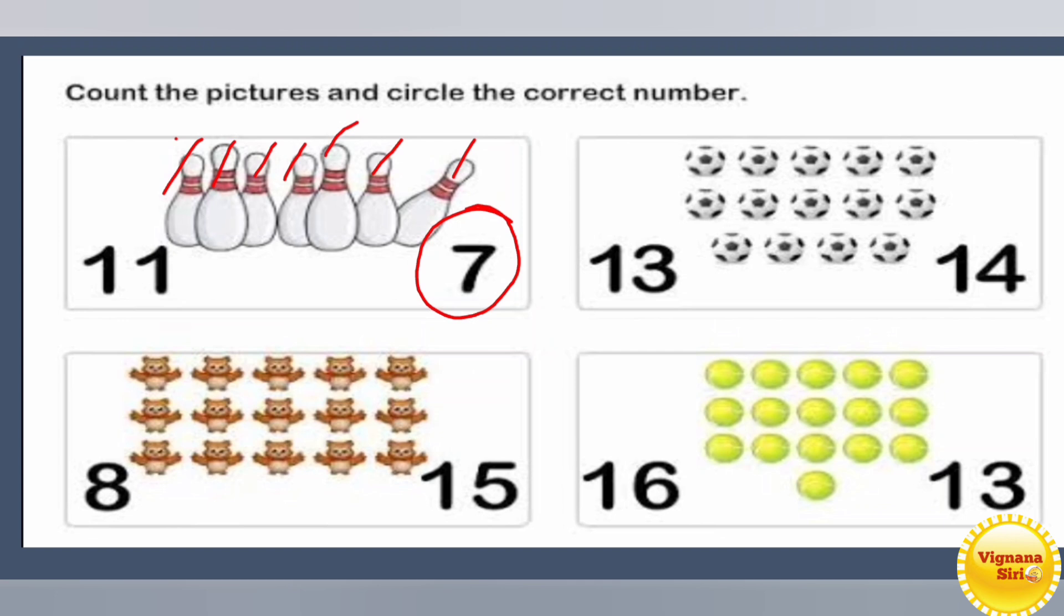Next one, how many balls are there? Those are footballs, right. 1, 2, 3, 4, 5, 6, 7, 8, 9, 10, 11, 12, 13, 14. So what is the number of 14? 1, 3 or 1, 3? 1, 4. It's the 1, 4, right? 14. So we have to circle 14.